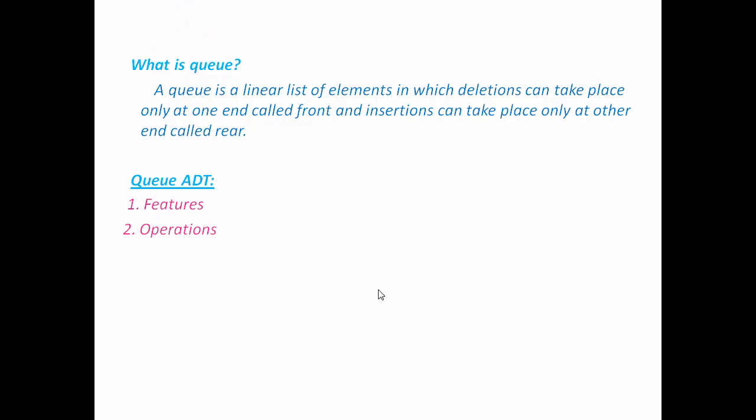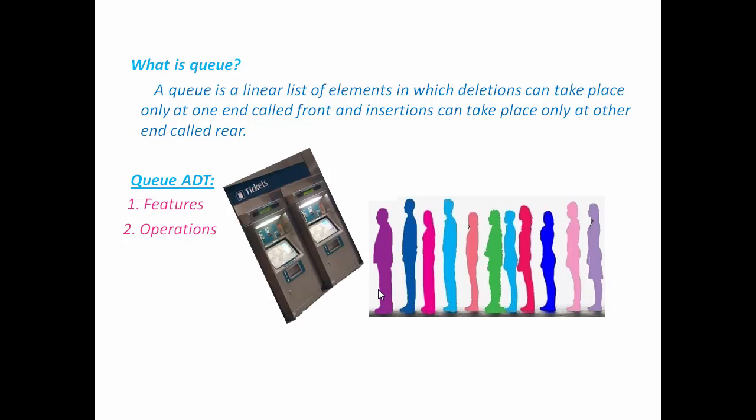To understand it, let's see some real world example. For example, people waiting in line at railway ticket counter. The man or woman who stands in the line first will get the ticket first. That's why we call it FIFO or first in first out.